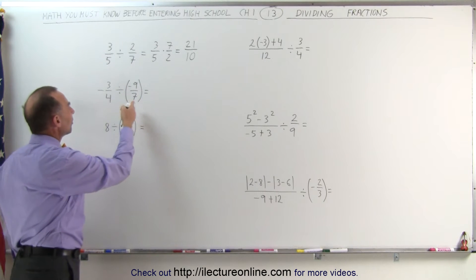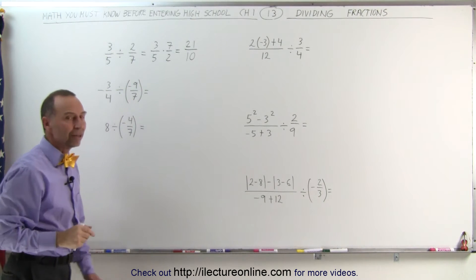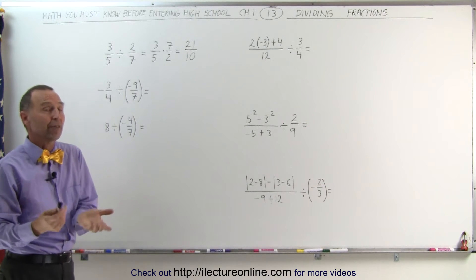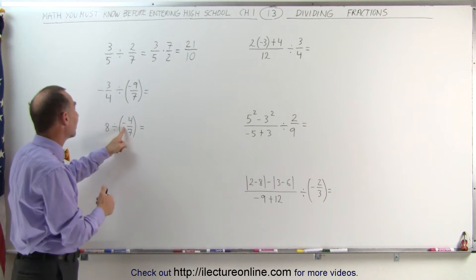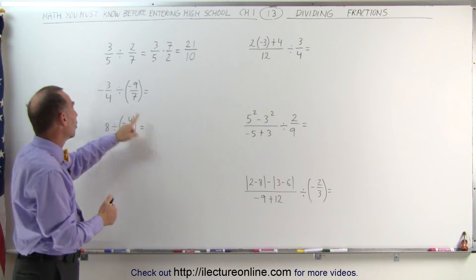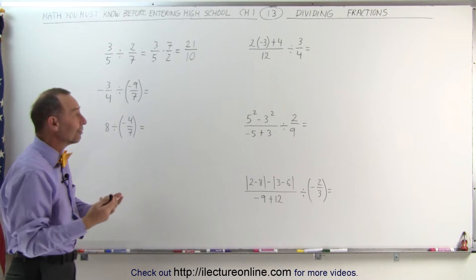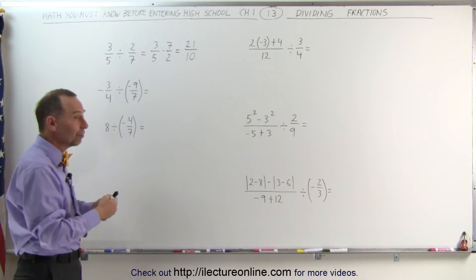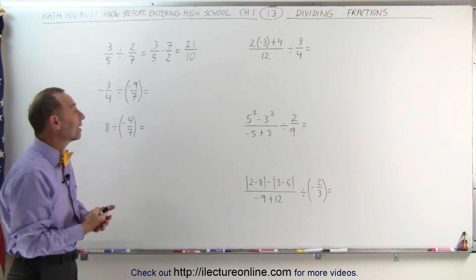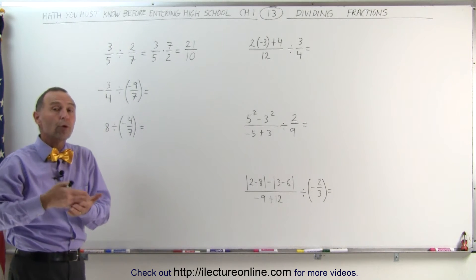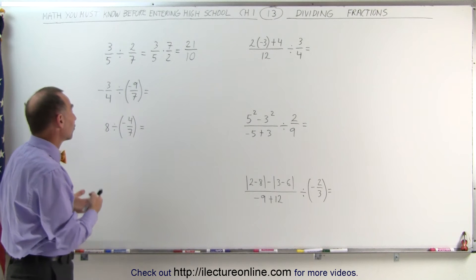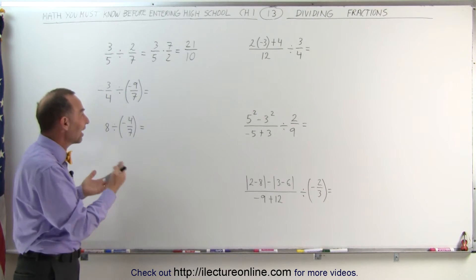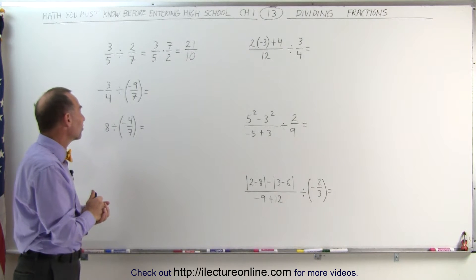Now we're going to do the same thing, but we have some signs. The signs for dividing fractions are exactly the same as for multiplying fractions. When there's only one negative sign, the result will be negative. When there are two negative signs, the result will be positive. If there are 3, 5, or 7 negative signs — an odd number — the answer is negative. If there are 2, 4, 6, or 8 negative signs — an even number — the answer is positive.